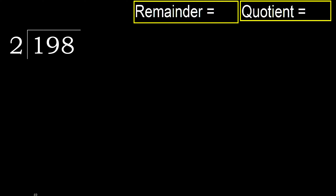198 divided by 2. 1 is less, therefore next. 19 is not less, therefore with 19.